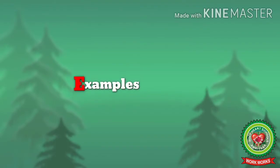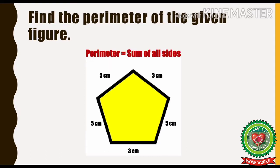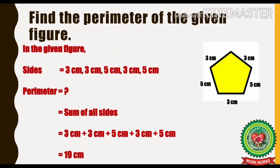Let's discuss some examples. Find the perimeter of the given figure. As you can see in the figure, different sides have different measurements. To find out the perimeter of the given figure, we will use the formula sum of all sides. Sum means to add. In the given figure, sides are equal to 3 cm, 3 cm, 5 cm, 3 cm, and 5 cm.